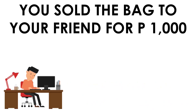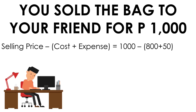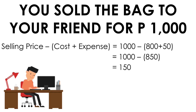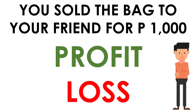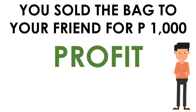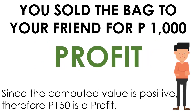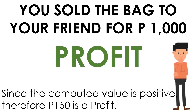Proceeding further, for the first situation, the selling price is 1,000 pesos. That would be 1,000 minus the quantity of (800 plus 50). Adding the cost and expense gives 850. Subtracting it from 1,000, the result is a positive 150. Did you profit or incur a loss? Correct — you profit. Since the computed value is a positive number, therefore 150 is a profit.